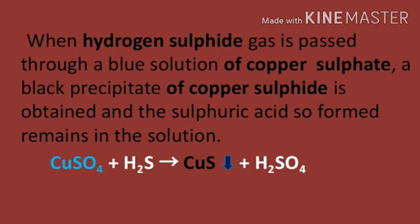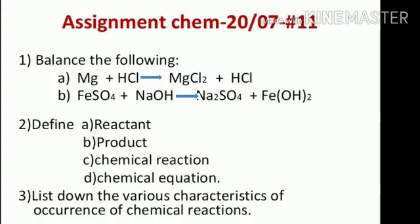This experiment has a very interesting observation. When you pass hydrogen sulfide gas through copper sulfate solution — which is blue in color — a black color precipitate of copper sulfide is obtained, and sulfuric acid is also formed which remains in the solution. We end the class with this assignment. Thank you. Bye-bye.